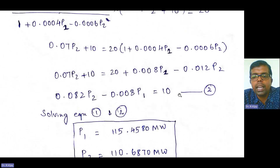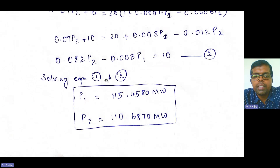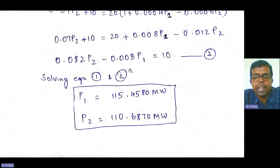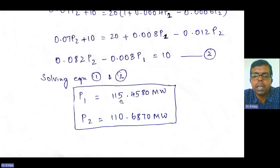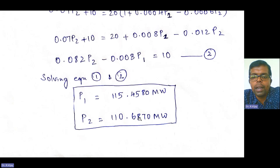Solving Equations 1 and 2 simultaneously using a scientific calculator, we directly get: P1 = 115.4580 MW and P2 = 110.6870 MW.